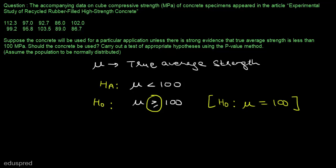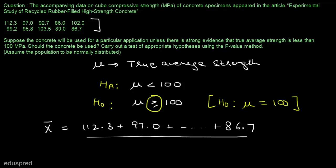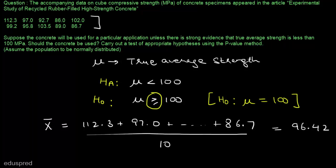Now let's see what information is given in the question. We are given this data, so let's calculate the sample mean and the sample standard deviation. We denote the sample mean by x-bar. So x-bar is equal to the sum of all observations: 112.3 plus 97.0 and so on through 86.7, divided by 10 because there are 10 observations in total. This equals 96.42.